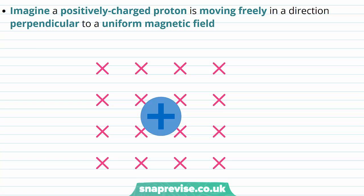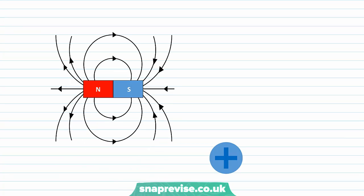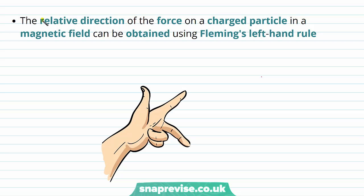Let's start by imagining a positively charged proton moving freely in a direction perpendicular to a uniform magnetic field. So our uniform magnetic field is pointing into the plane of the paper and the proton is moving perpendicular to it. As the proton is charged and moving in a magnetic field, it experiences a force. The relative direction of a force on a charged particle in a magnetic field can be obtained using Fleming's left hand rule.